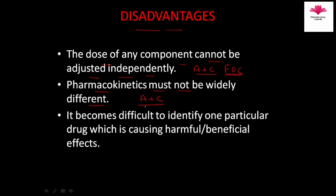As seen in the example of amoxicillin plus clavulanic acid, the pharmacokinetic properties of both drugs are nearly the same — the half-life is nearly two hours for both drugs, and other pharmacokinetic properties are also similar. If we want to combine two drugs whose pharmacokinetic properties are very different, it is not possible in a fixed dose combination.